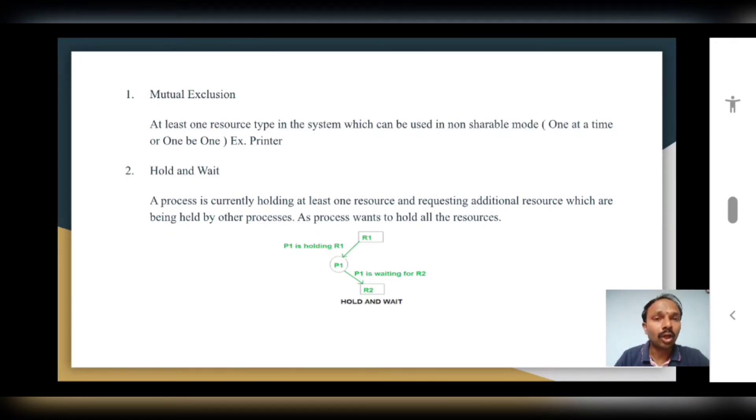No one is waiting for anybody else. Rather, all the processes are independent for executing their work. Now if this condition is there, 25 percent conditions for the operating system going into deadlock are complete.